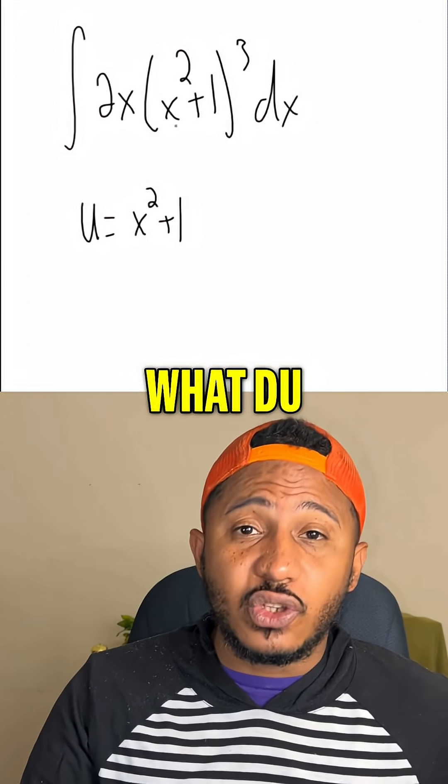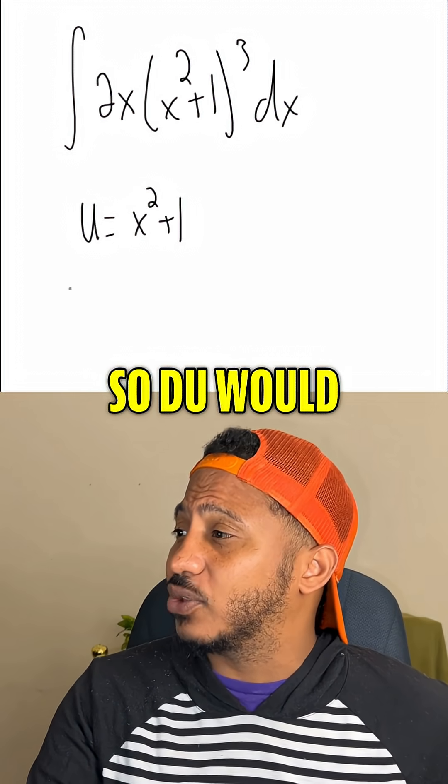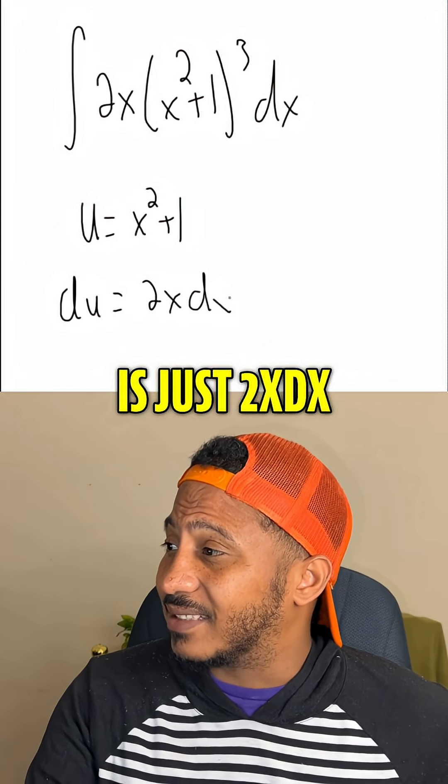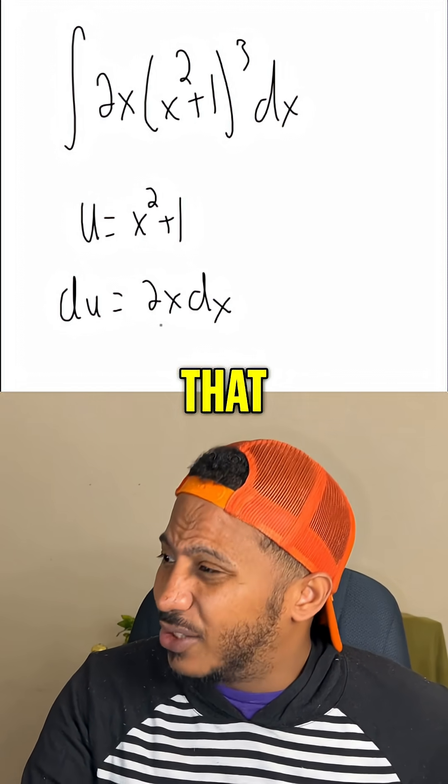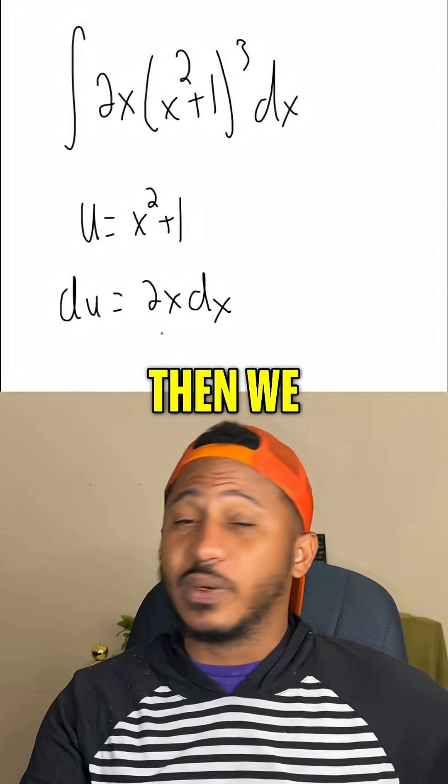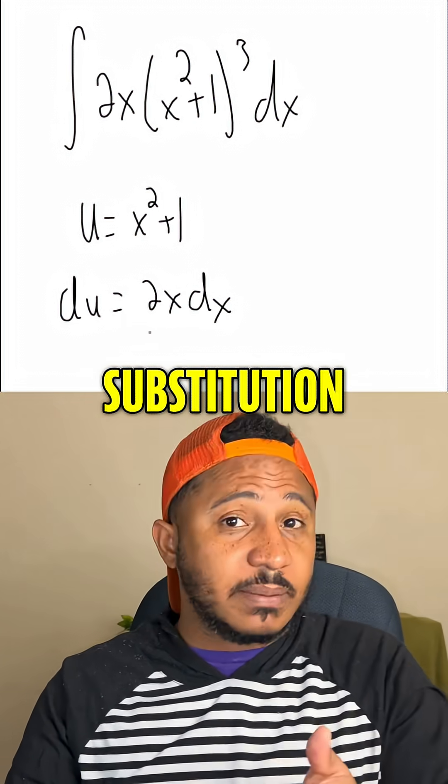And then we consider what du might be, so the derivative of that. So du would be the derivative of x squared plus 1, which is just 2x dx. And now we always see that if that derivative is already sitting in our original integrand, then we know this may be just a u substitution problem.